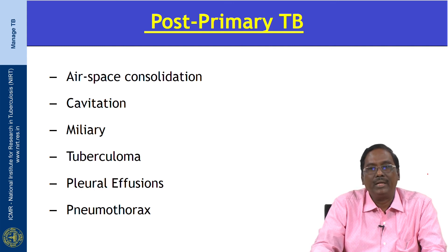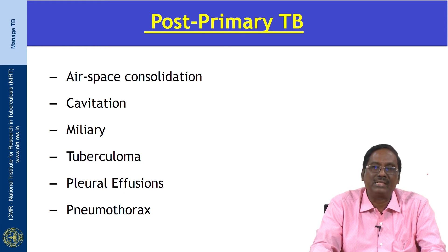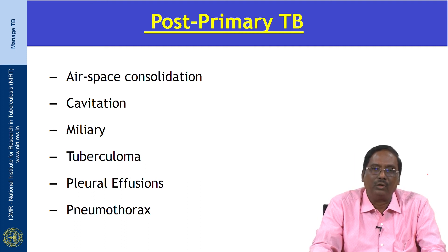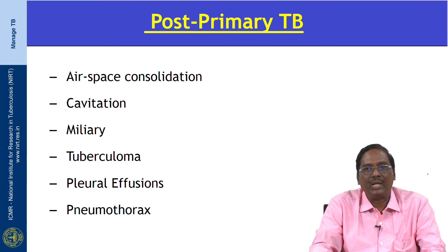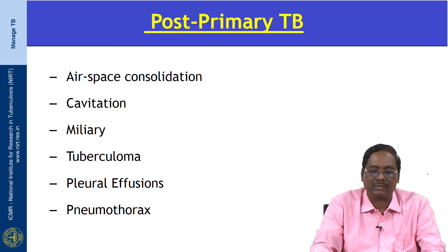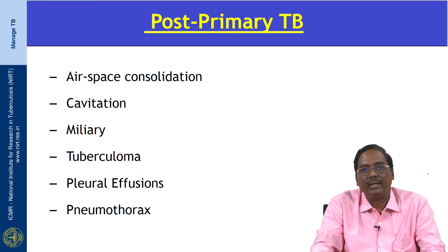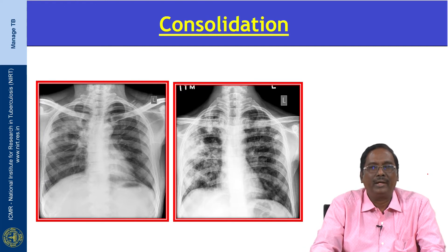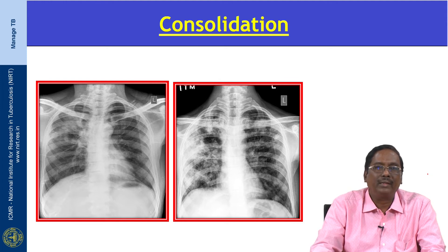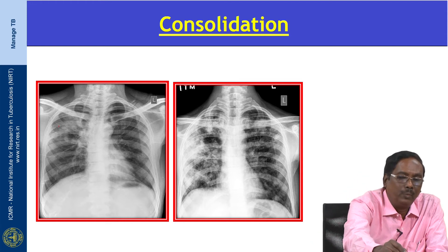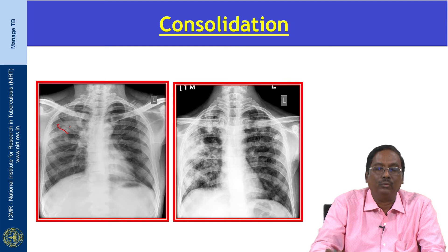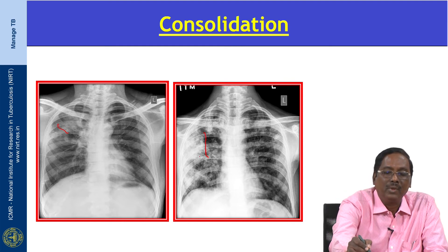Post-primary TB occurs in previously sensitized patients and arises either from reinfection or reactivation of dormant bacilli from primary infection. It occurs predominantly in adolescents and adults. Importantly, lymph node involvement never occurs in post-primary TB. The most common finding is consolidation, which appears as a poorly ill-defined area of opacity with predilection for the upper lobe apical segment and posterior segment. It spreads by bronchogenic spread from the apex, reaching the lower lobe as well.